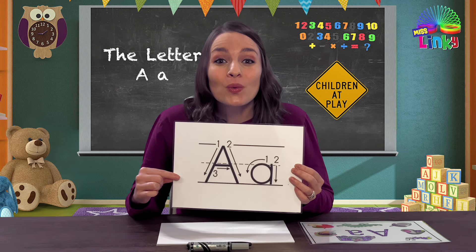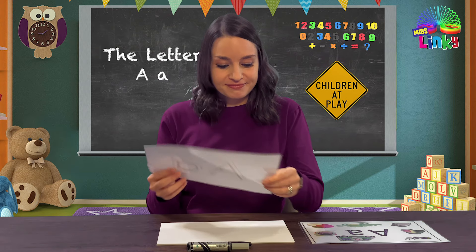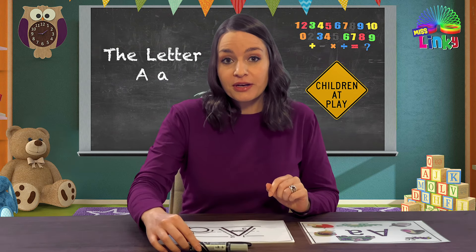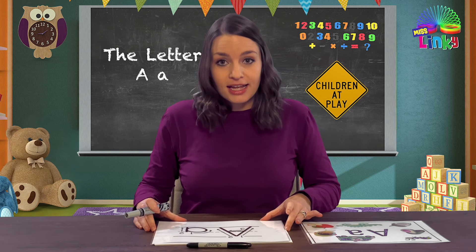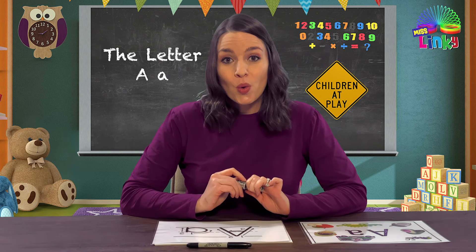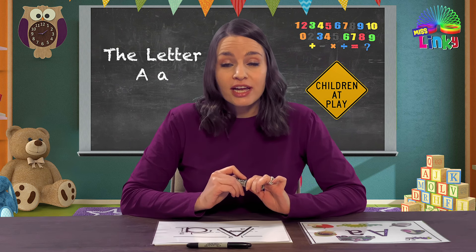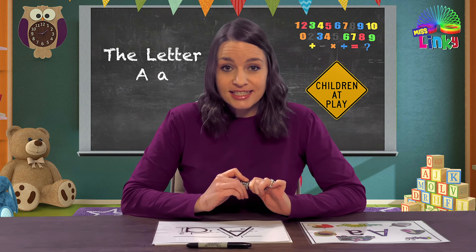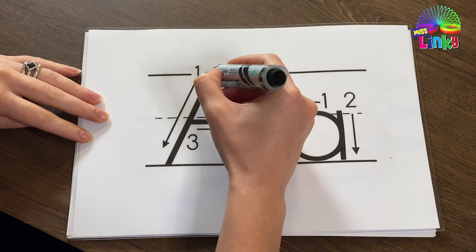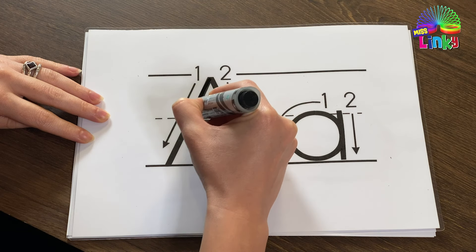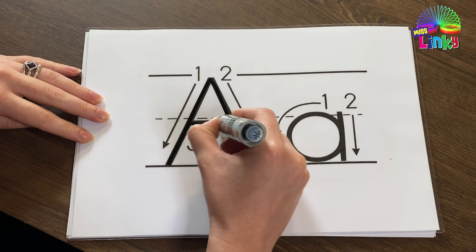Let's practice writing the letter A. We will start with writing the capital letter A. So get your pen and let's start. When we write the letter A we are going to make three lines. Now look carefully. We go down, down and across.